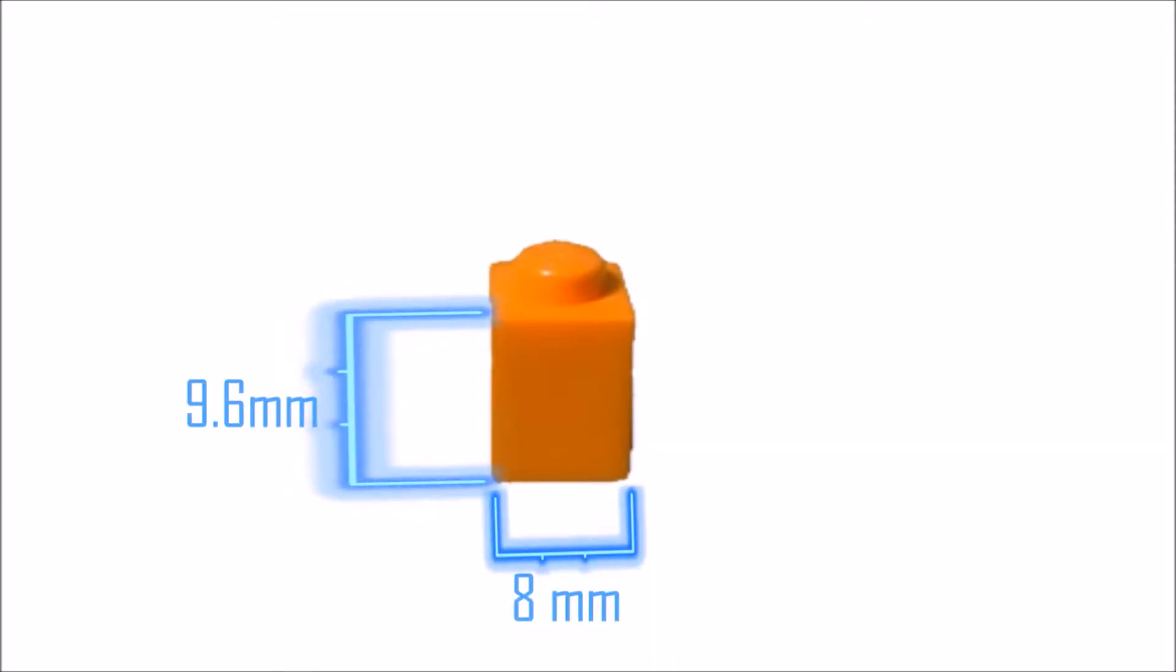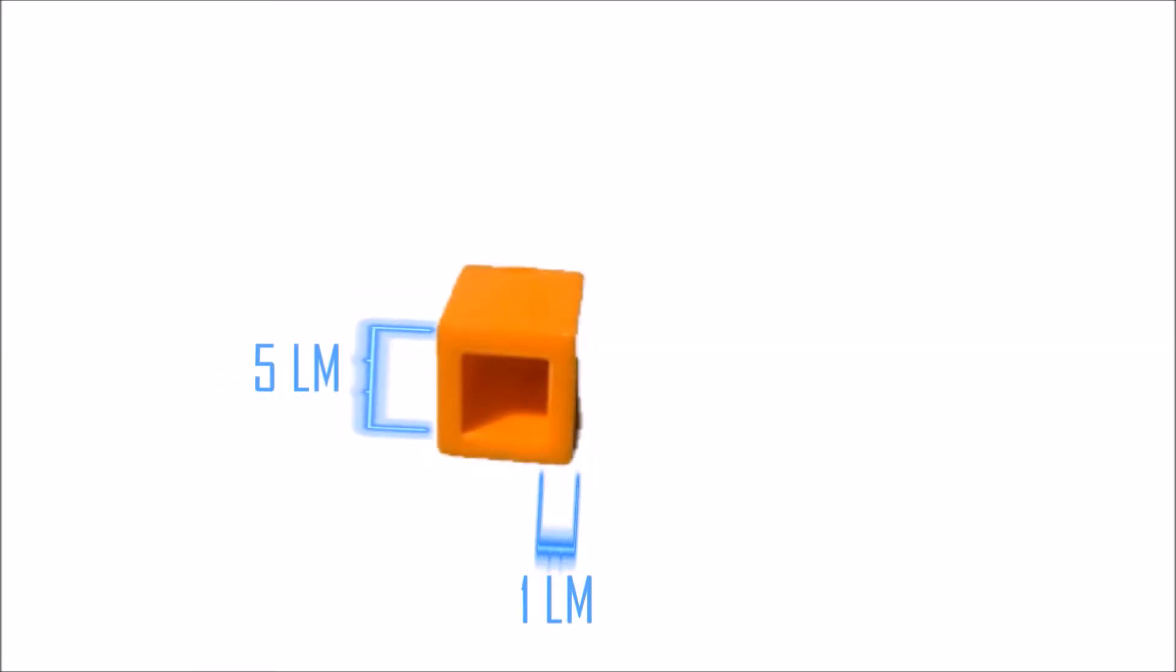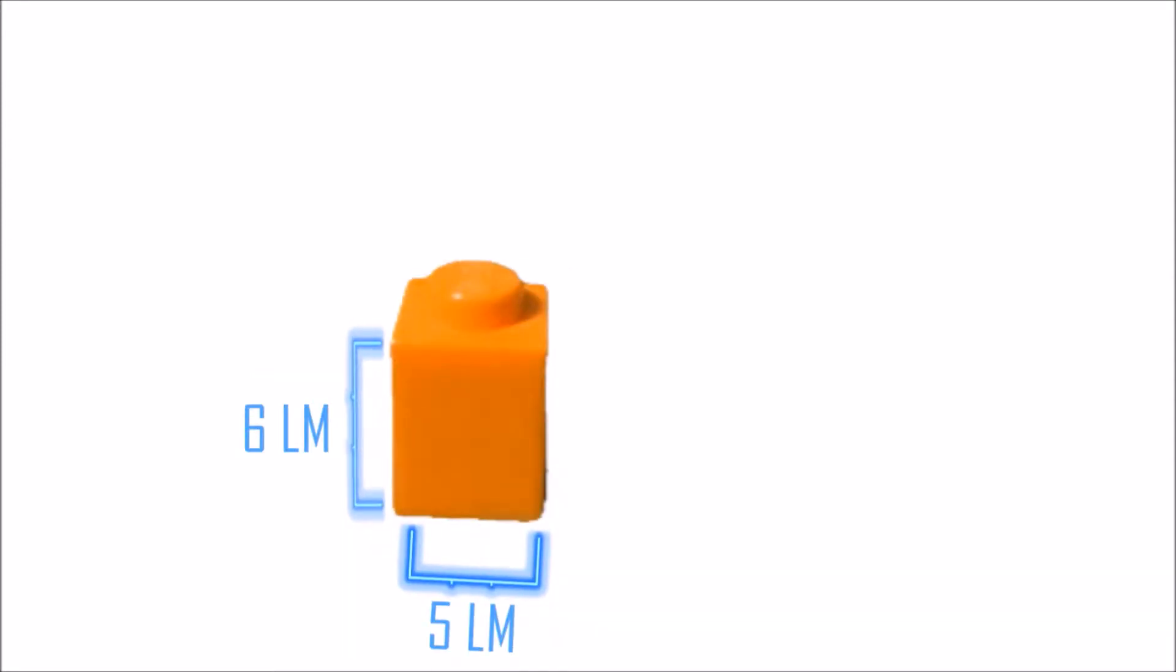LEGO meters. The thickness of a wall on a brick would be 1 LEGO meter. If the interior is 3x3 LEGO meters, then the width of a 1x1 is 5 LEGO meters. The height is 1 LEGO meter more, 6. So, a 1x1 brick has a ratio of 5 to 6, and its dimensions are 5x5x6 LEGO meters.